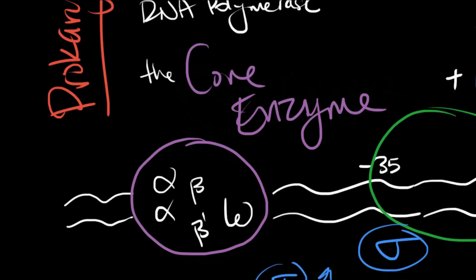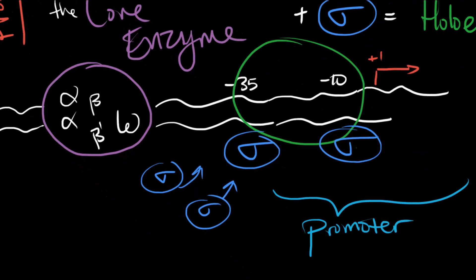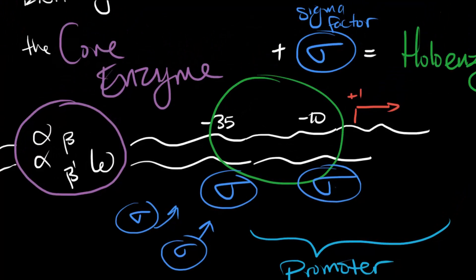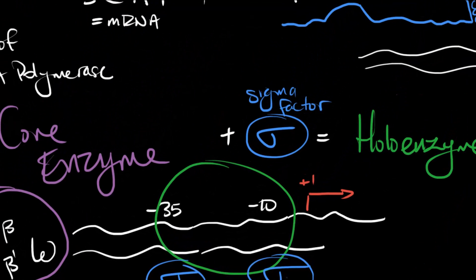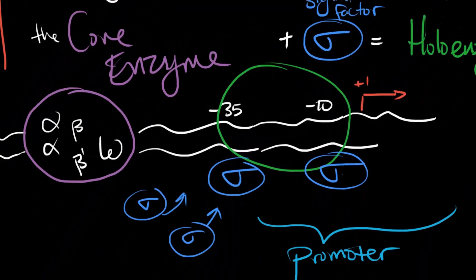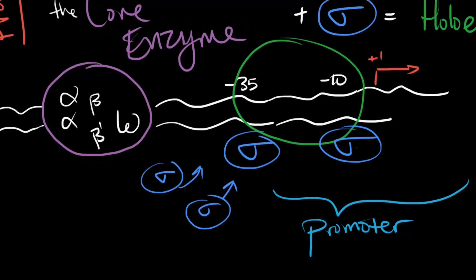It will continue to scan until it finds the right place to start. It actually doesn't know when to start without the help of two sigma factors, one that binds at the negative 10 and the other at the negative 35 box. Once a core enzyme has sigma factors bound to it, we call it the holoenzyme. We rename it because it's ready to start and knows where to start, so it will. That's all during initiation and happens at a stretch of DNA known as the promoter.